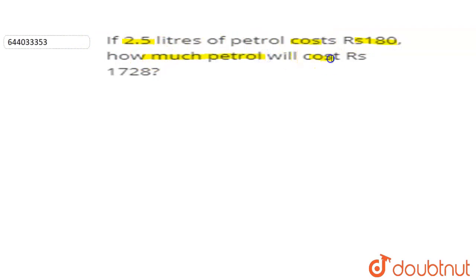Okay, so let us understand. Let us assume that the amount of petrol that will cost rupees 1728 is x. Let us take amount as A and cost the corresponding cost of the petrol as B.